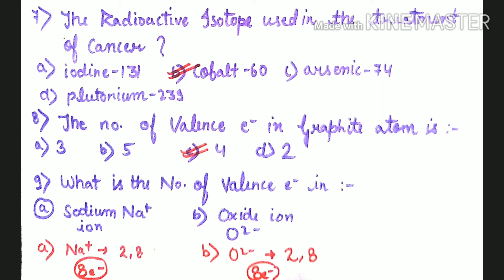Question number 8: Number of valence electrons in graphite atom. Graphite is a form of carbon. Carbon's electronic configuration is 2,4, so 4 valence electrons will be in graphite atom. Third option is the right answer.